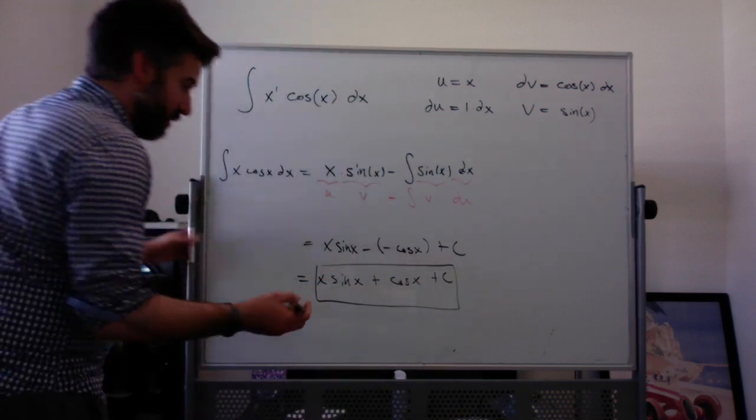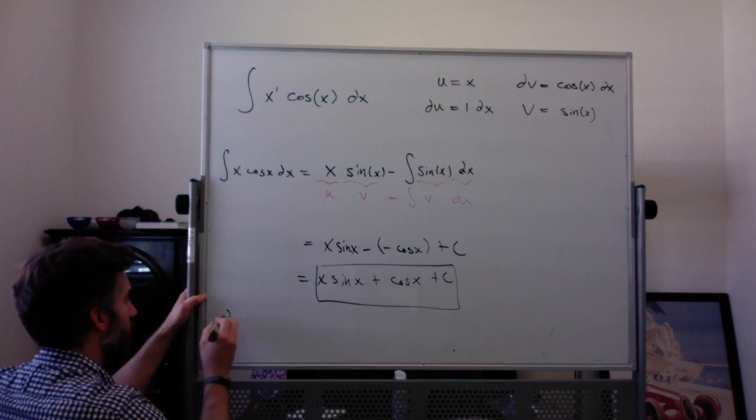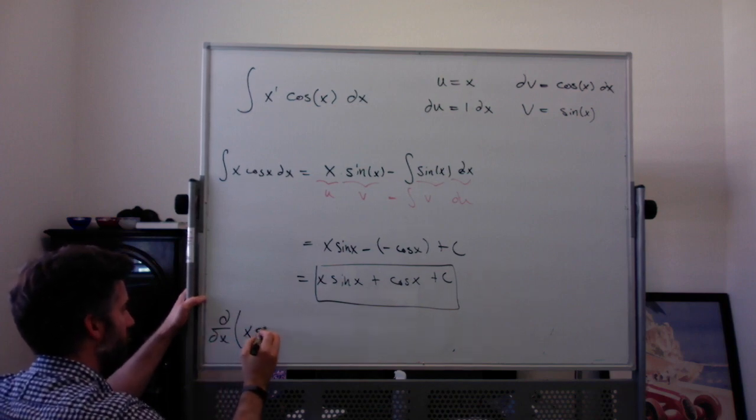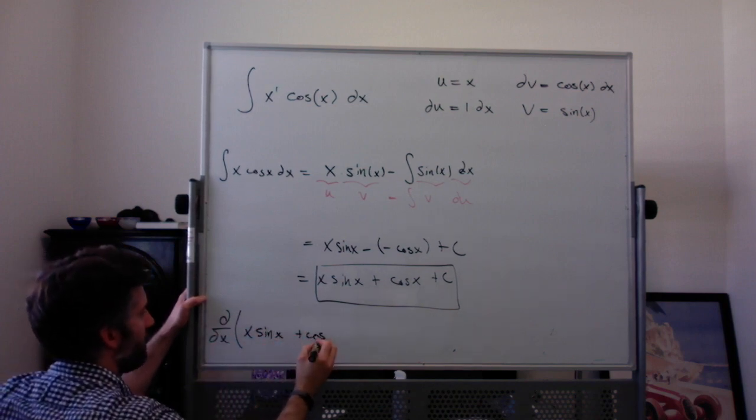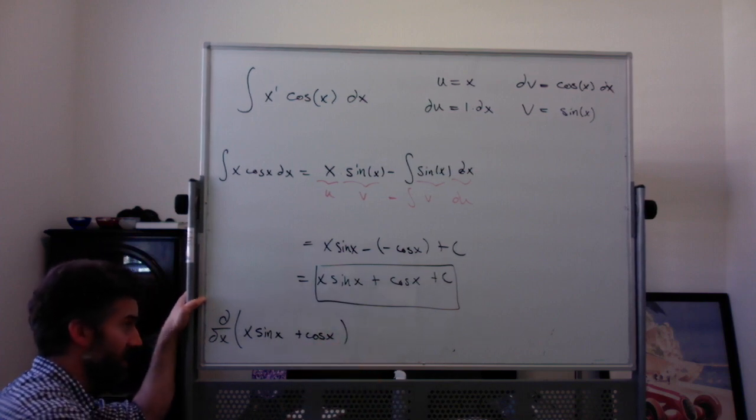If you really wanted to, you could check that this is right by taking the derivative. The derivative of x sine of x plus cosine of x. I'm not going to write the plus C because we know the derivative of C is zero.